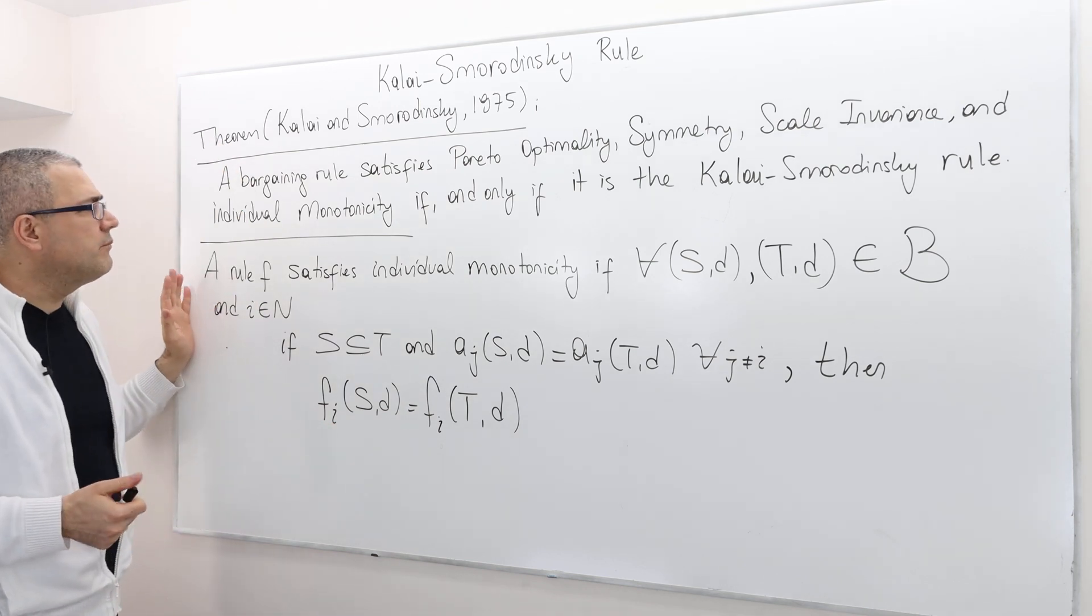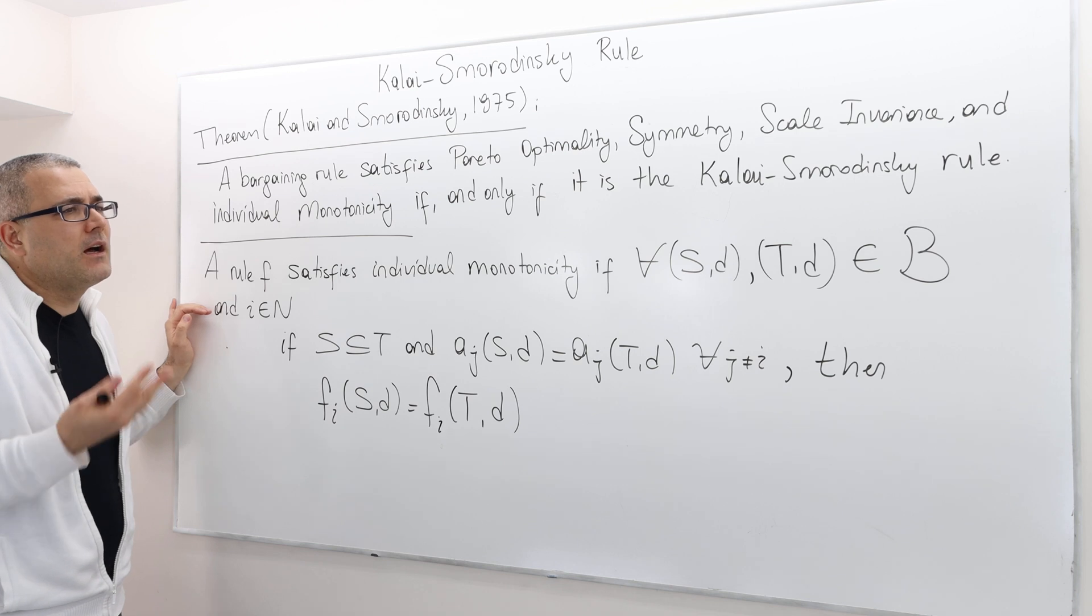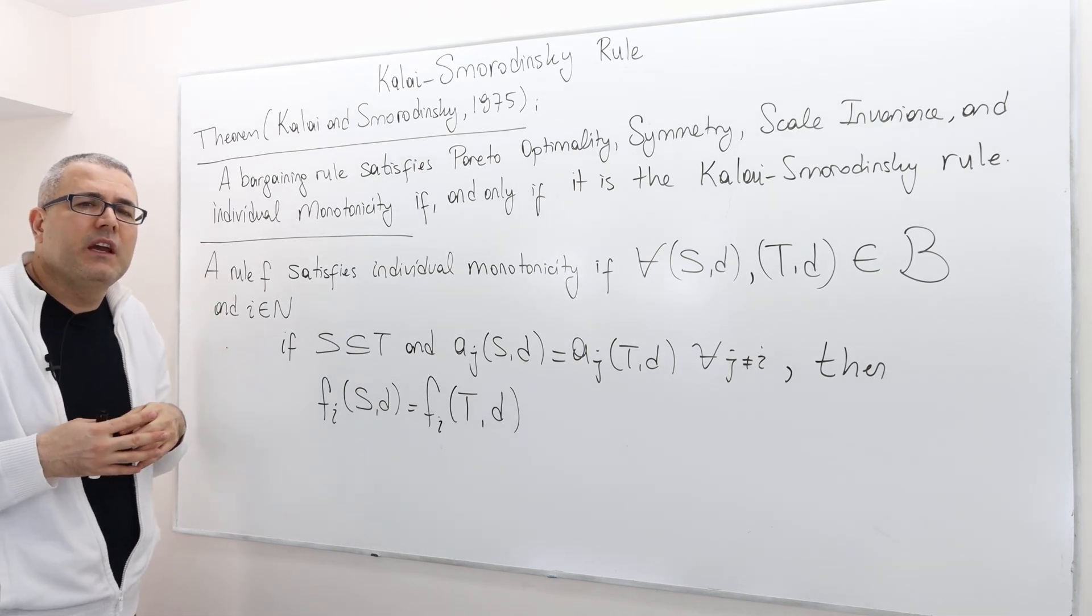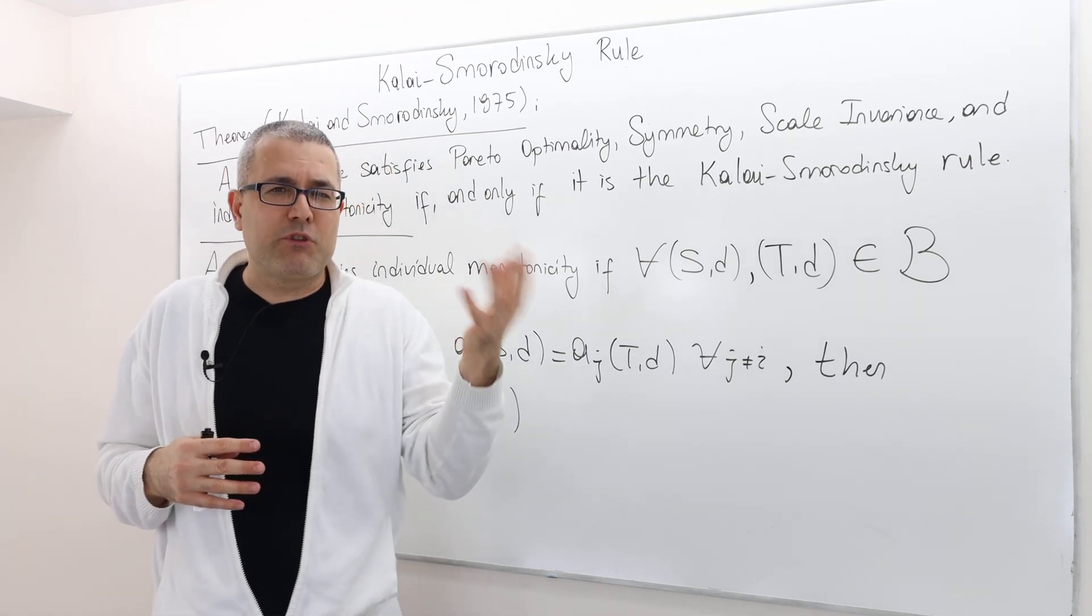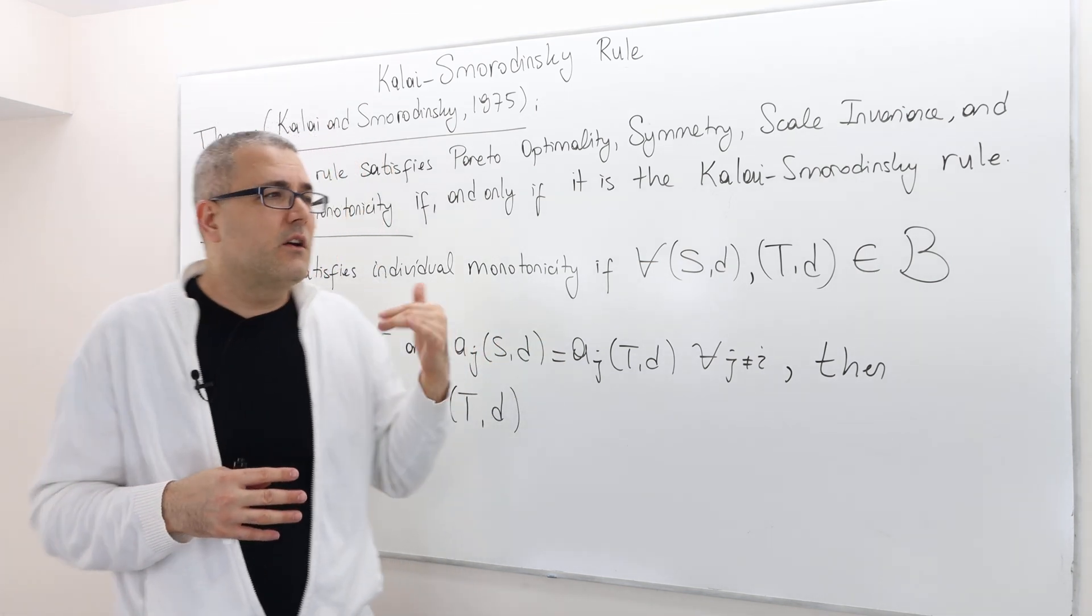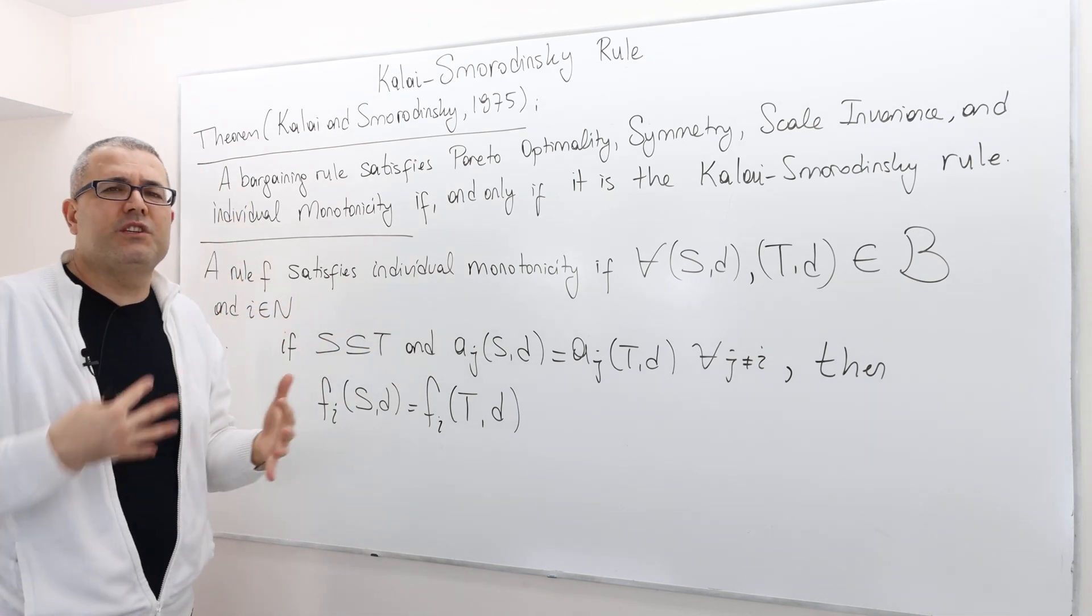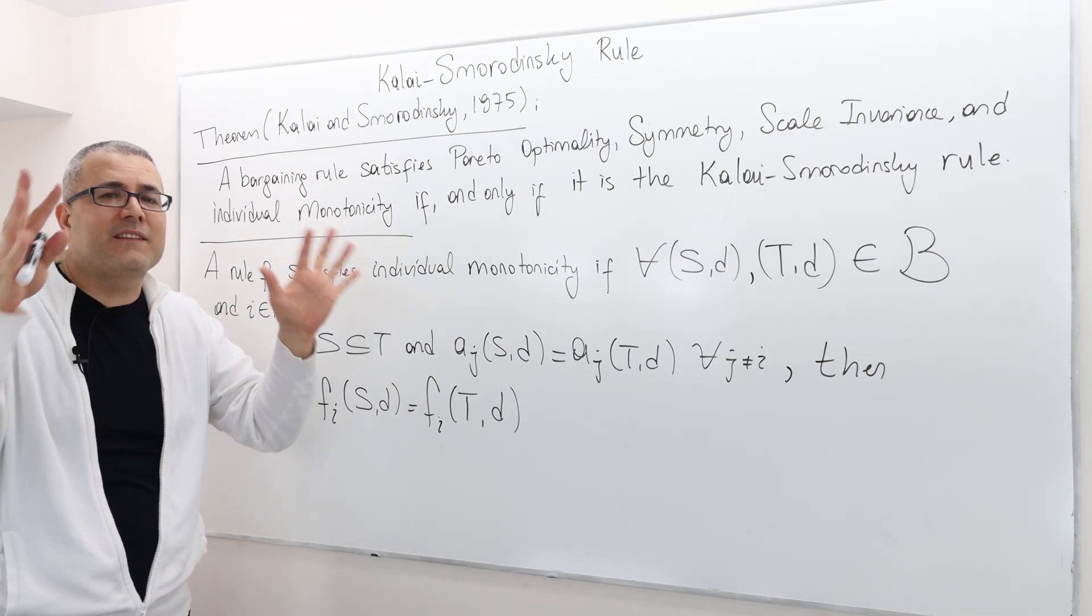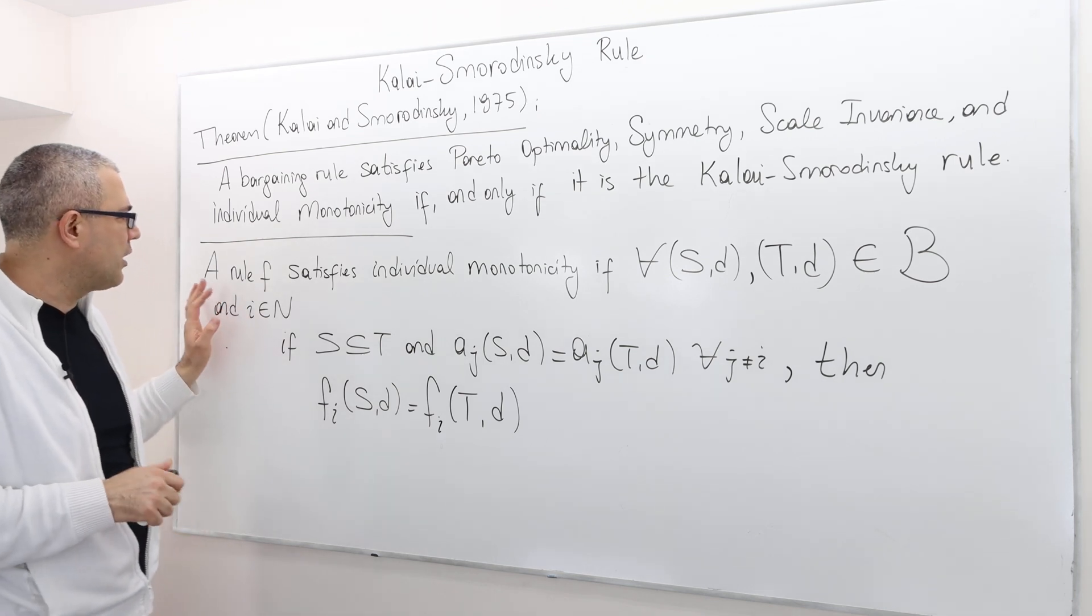Well, why we get rid of independence of irrelevant alternatives? Well, because it does not care about players' aspiration points. However, the individual monotonicity is a new axiom which takes into consideration how much players care about their maximum payoff that they can actually attain in this bargaining problem.